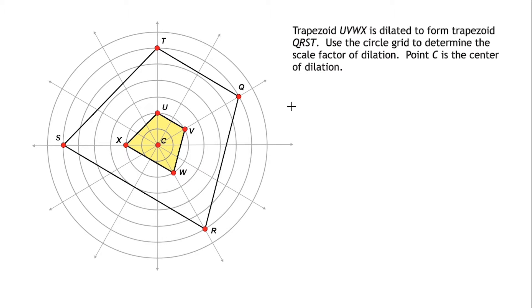Now, whenever you want to determine what the scale factor is of a dilation, what you do is you start by going to your center of dilation, and you draw a line going to any of the vertices of your shape. I'm just going to start by going from point C to point V. And then what we have to do is see what the length of that line is. Now, with a circle grid, we measure units in radii.